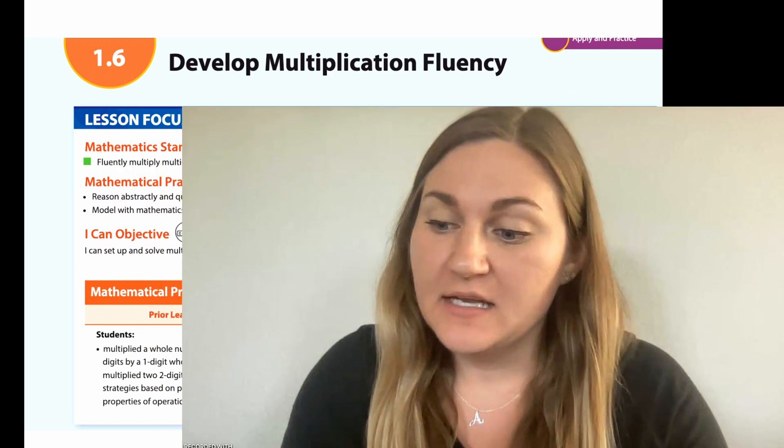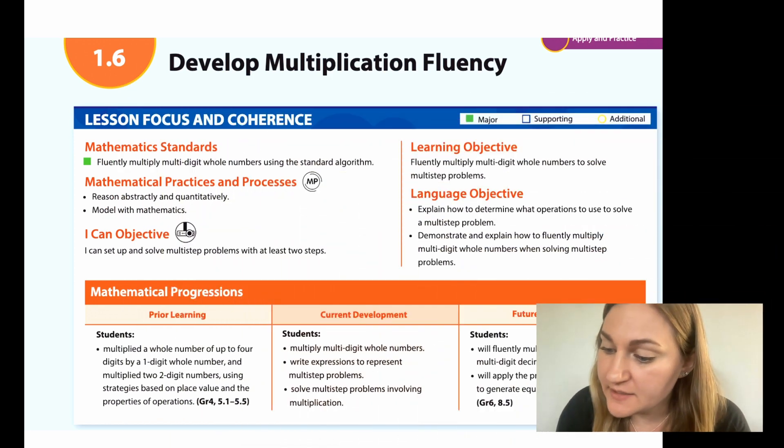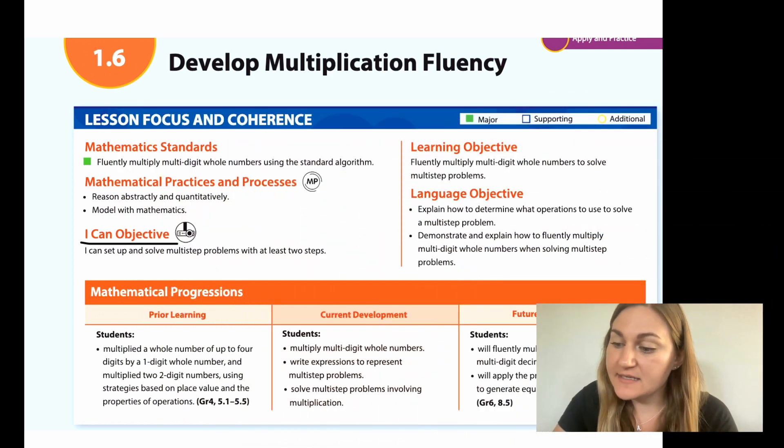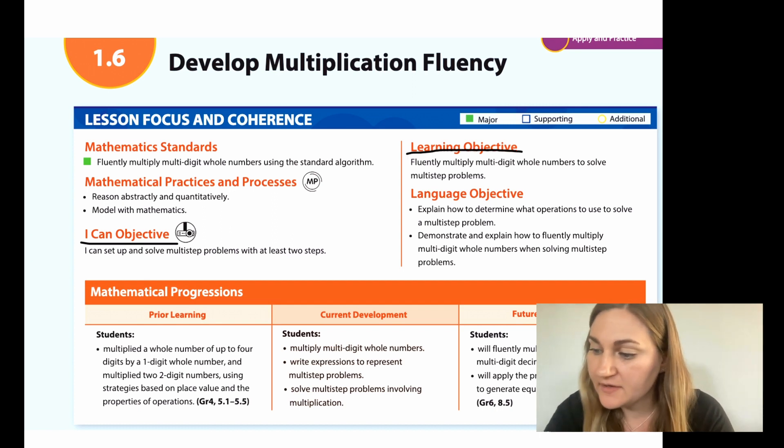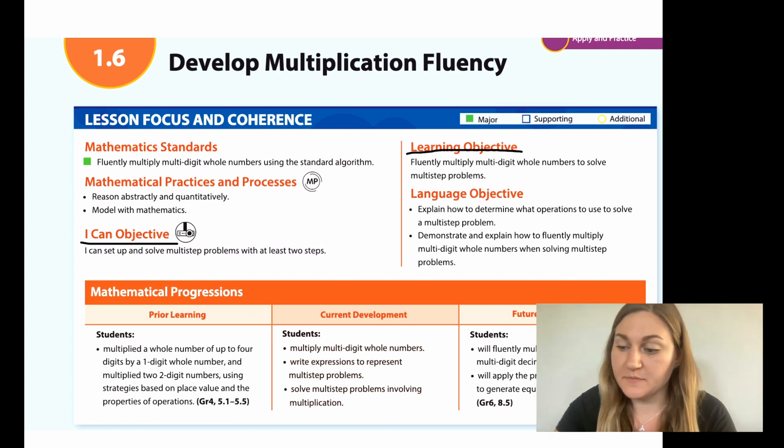Hi, I'm Natalie Rhodes and this is Into Maths fifth grade module one lesson six. I'm going to go ahead and start out with the I can objective here. I can set up and solve multi-step problems with at least two steps. And the learning objective, fluently multiply multi-digit whole numbers to solve multi-step problems.